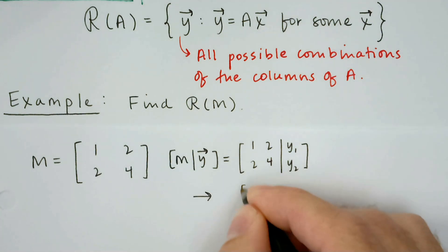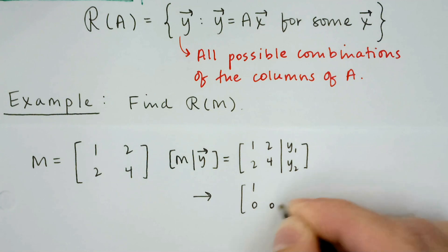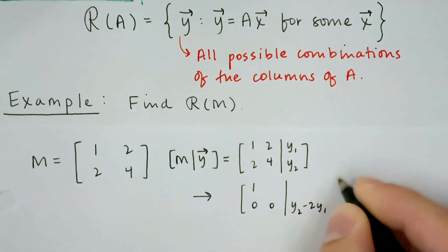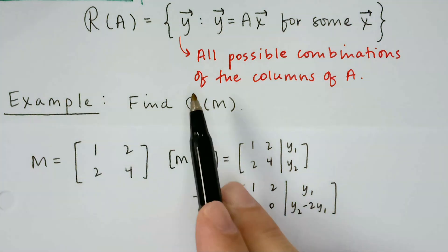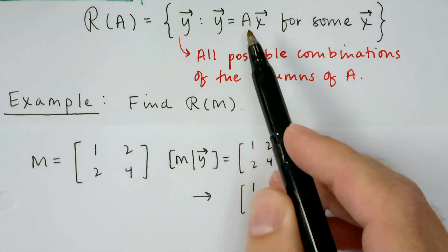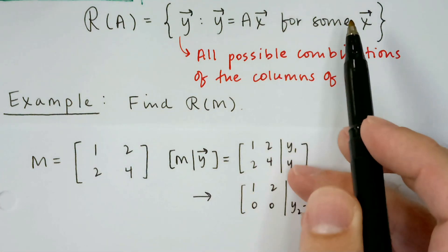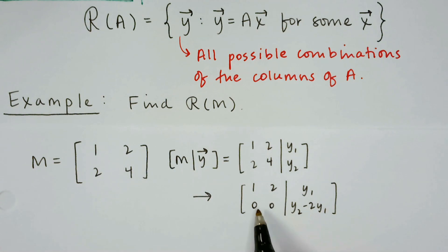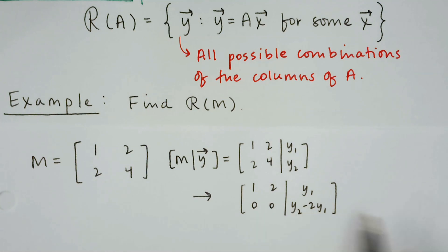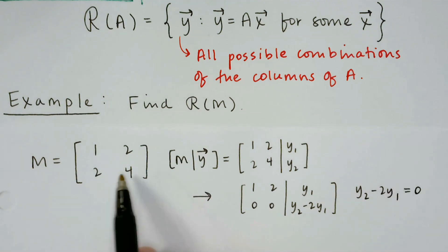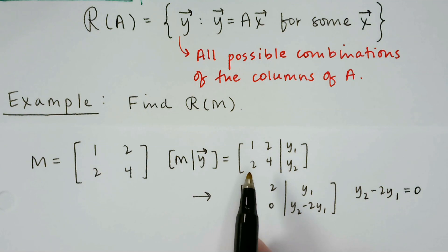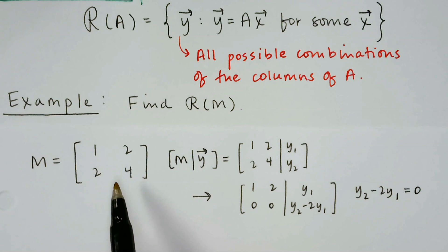I'm going to subtract two copies of the first row from the second row, and I'll get zero and zero on the left side, and over here I get y₂ minus two times y₁. For the range of M, we need to find all y vectors that can actually be written as A times x for some x. For the system to be consistent, we need y₂ minus two y₁ to equal zero.